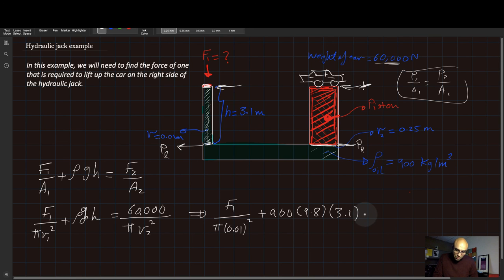And this should be equal to 60,000 divided by pi R2 which is 0.25 squared. Solving for F1, you will find that F1 is equal to 87.4 newtons. And that's it for this problem, thank you.